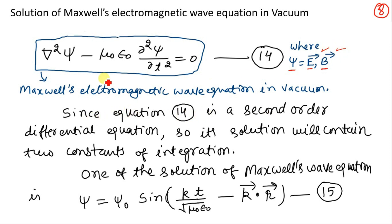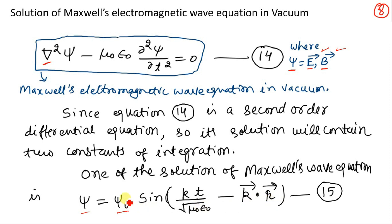Equation number 14 is a second order differential equation, therefore its solution must contain two constants of integration. There are many solutions of this equation, but one of the famous solutions we will discuss here is: psi equals psi_0 sin(kt/√(μ₀ε₀) minus k·r), where psi_0 is the first constant of integration and k vector is the second constant of integration.